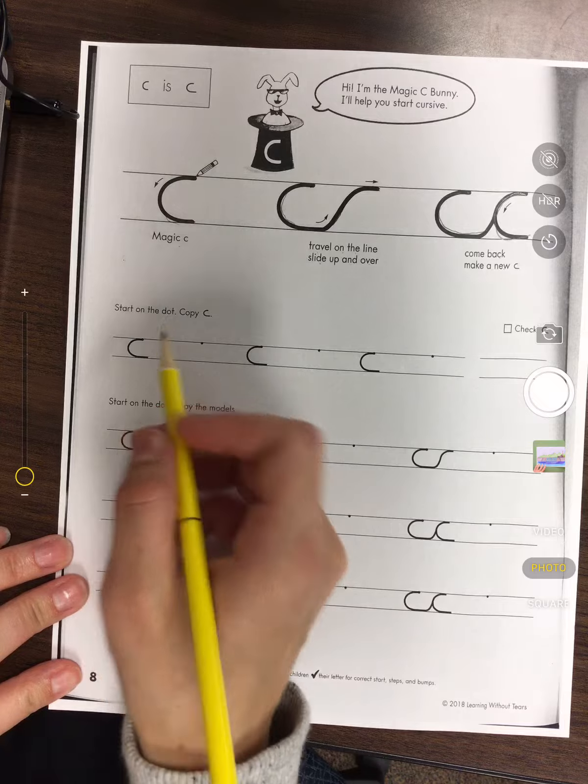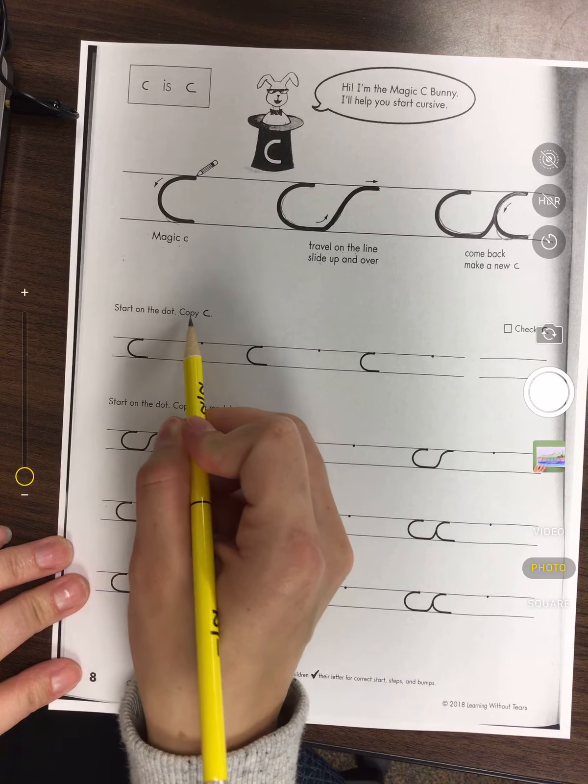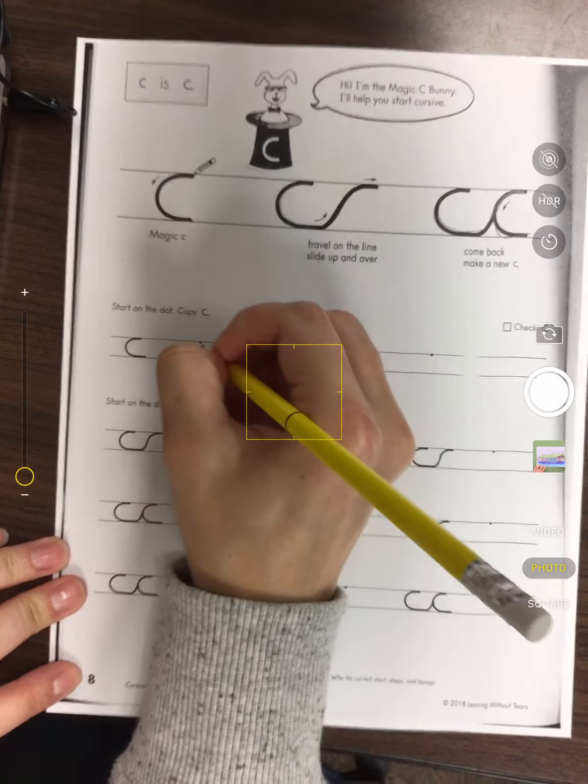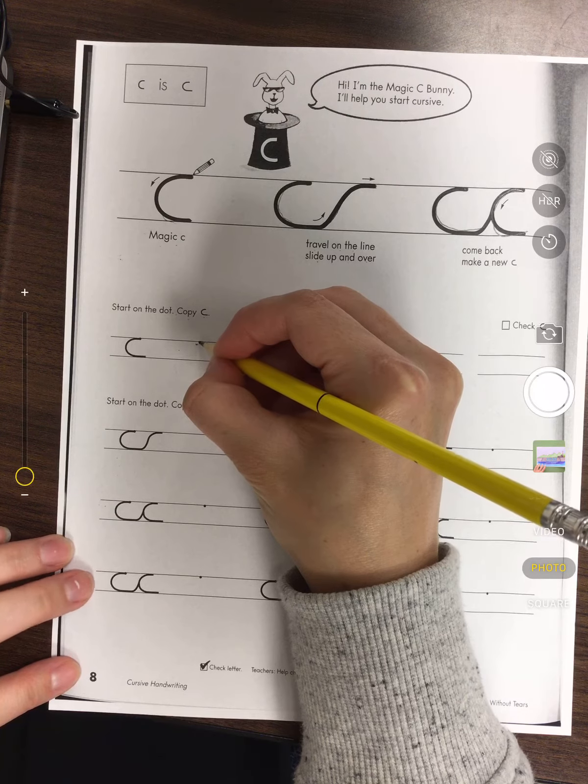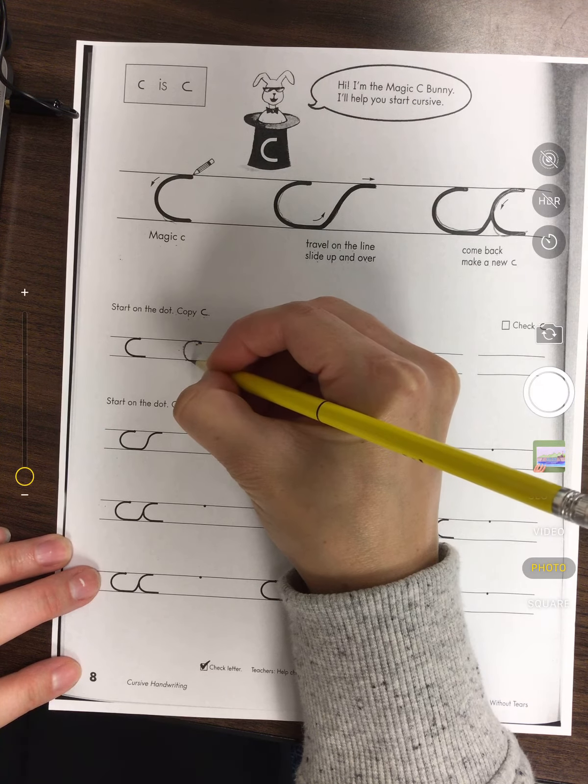Okay friends, now we're going to start on the dot and copy C. So our dot is right here and we're just gonna make a curve to make our C.